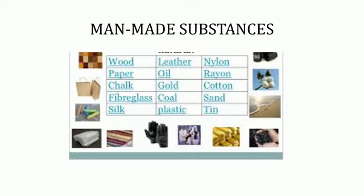One of the basic traits of man is to strive for newer things and to make life more comfortable. As a result, man not only learned to use natural substances but also began to process them to make new substances. Several such substances are easier to manufacture and can be produced in large quantities at low cost, so they came to be used on a large scale. New substances produced by processing naturally available substances are called man-made substances.